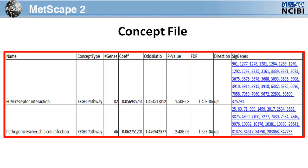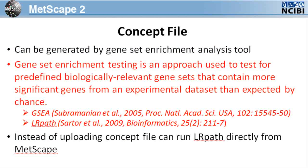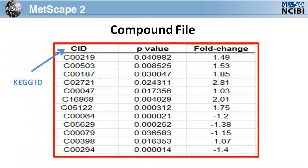In this tutorial, a concept is defined as any group of genes. The concept file can be generated by a Gene Set Enrichment Analysis tool such as GSEA or LRPath. If you are not familiar with Gene Set Enrichment Analysis, it is an approach used to test for predefined, biologically relevant gene sets that contain more significant genes from an experimental data set than expected by chance. With Metscape, you can either load an existing concept file or generate one using LRPath directly from the plugin. If you choose to load a compound file, it should include the compound ID (which is the KEGG ID), the p-value, and either fold change or log fold change.